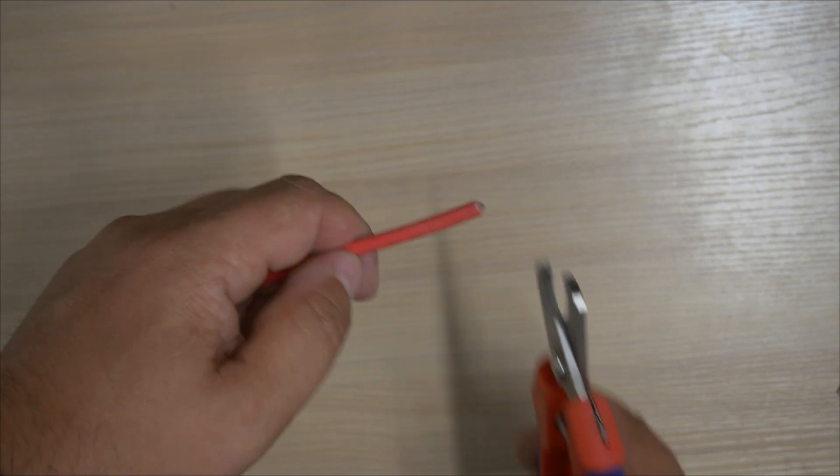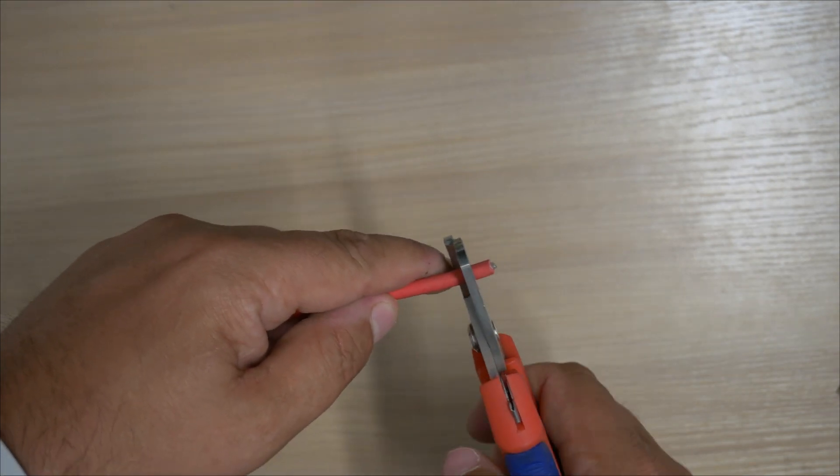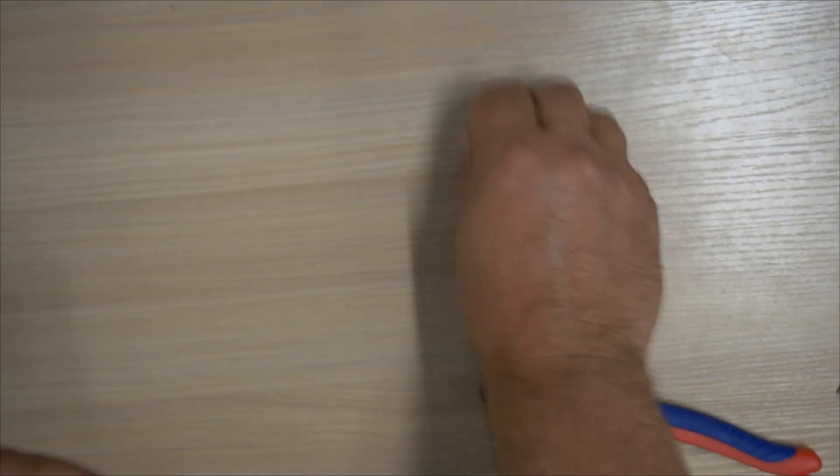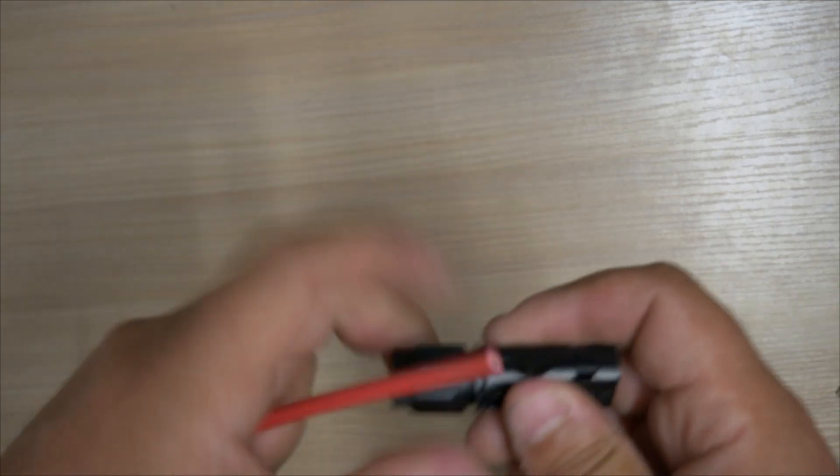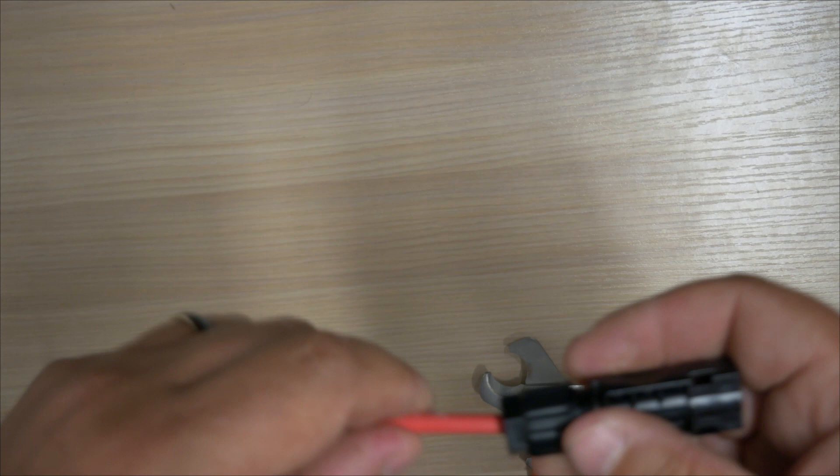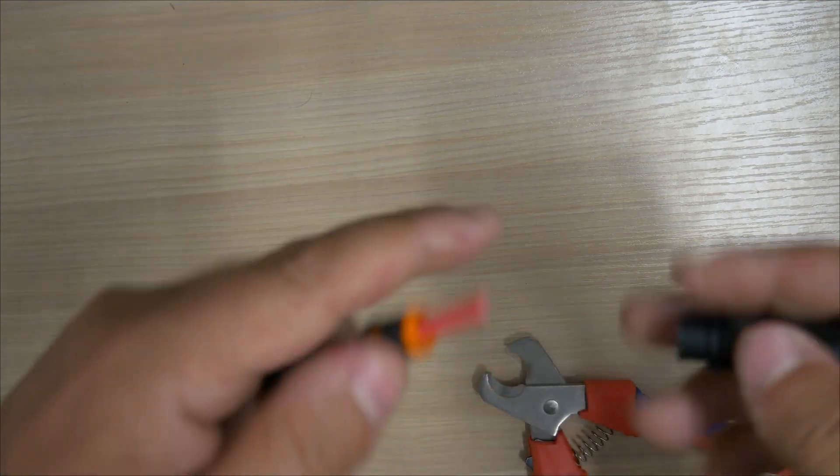So we now repeat the process for the other end. Start by squaring the end off so it's a nice, clean, fresh cut. Pop the gland onto the cable. So we need the back part of this on there ready. And again, slide it through so it's on there. And then pull it right out of the way.